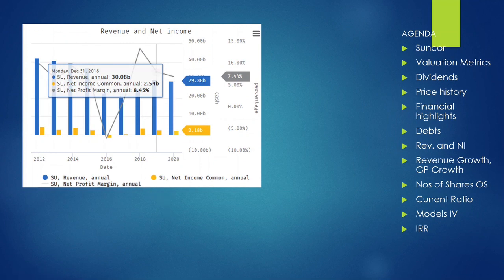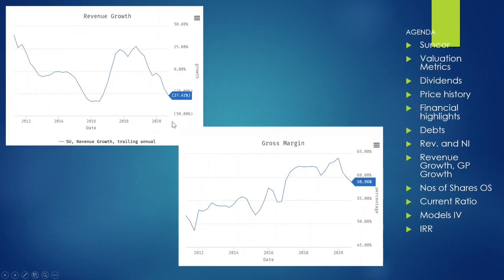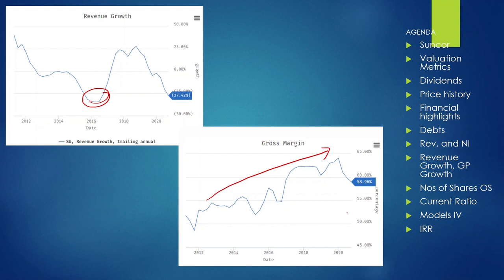Looking at revenue: the company is making almost $30 billion in revenue, and net income is around $2.18 billion, which looks fairly consistent historically. There was a dip in 2016–17 but it recovered. The revenue growth chart swings up and down, but importantly the gross margin growth is continuously increasing in recent years — there's a minor dip but overall it picks up.